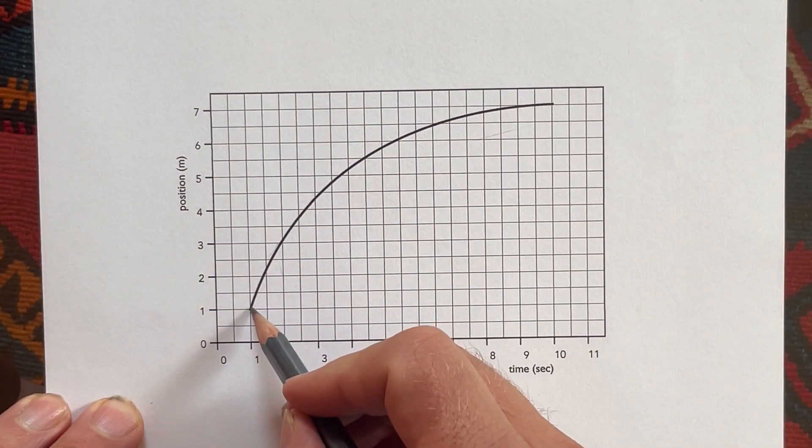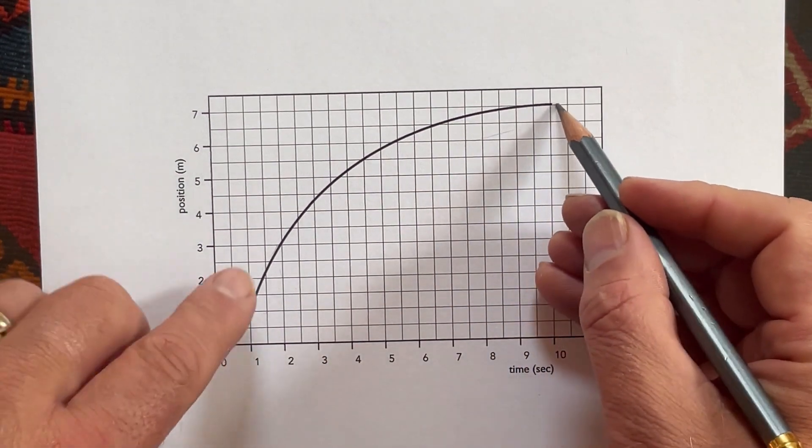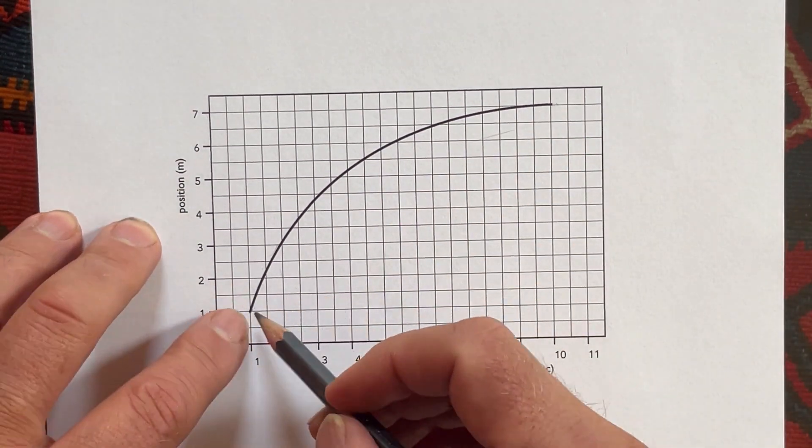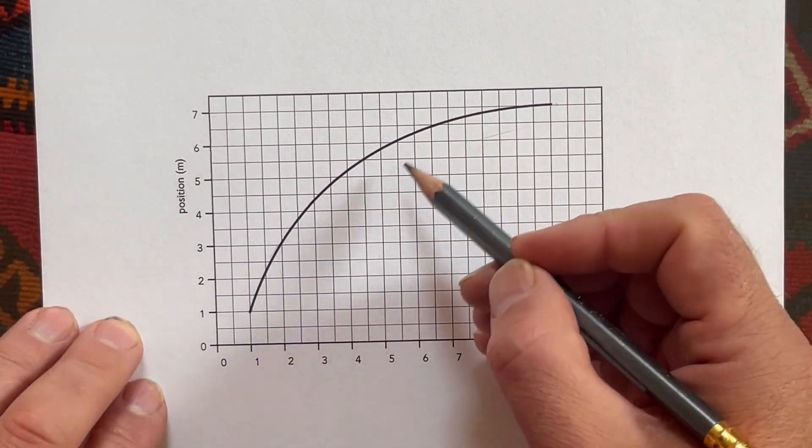I mean, we could just connect the starting point with the ending point and make a line, but that's the slope of the overall thing. It's not this changing slope.